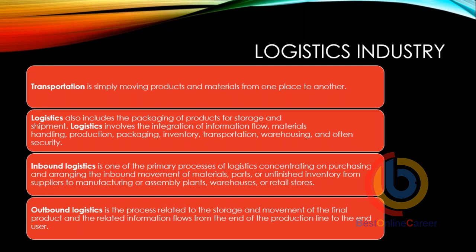For example, you send a specification for a particular glass or steel composition for your car. Those goods will be inbound to your car manufacturing plant. This kind of logistics where you are importing materials from a source to your plant is called inbound logistics. When you process those inbound materials — shaping the glass or steel into your requirement — you create a finished product: a car. When you then transport that car to the dealer, that kind of logistics is called outbound logistics.